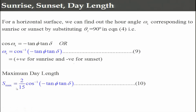Day length S_max = (2/15) * omega_s, where 15 comes from 360 degrees in 24 hours - converting to hours. So 15 * S_max = 2 * cos⁻¹(-tan(phi)tan(delta)) = 2*omega_s. All of this is valid for the northern hemisphere; for the southern hemisphere, appropriate corrections are needed. For an inclined surface between March 21 and September 21, as the sun moves more northward in summer, omega_s becomes cos⁻¹(-tan(phi - beta)tan(delta)), requiring beta to be accounted for.